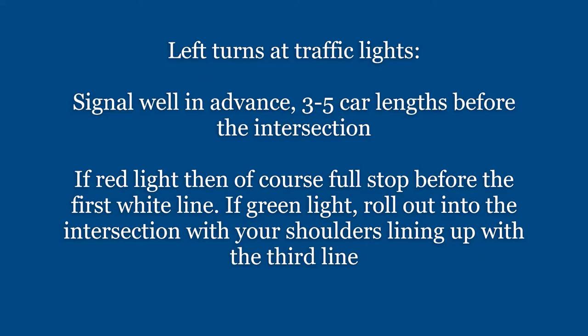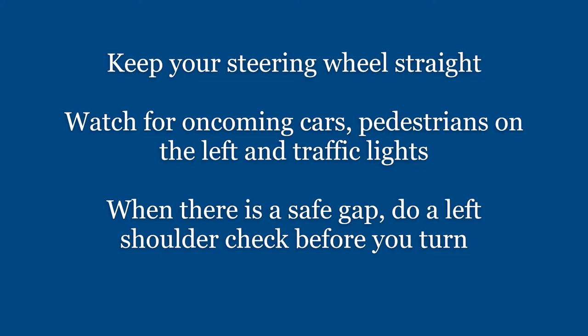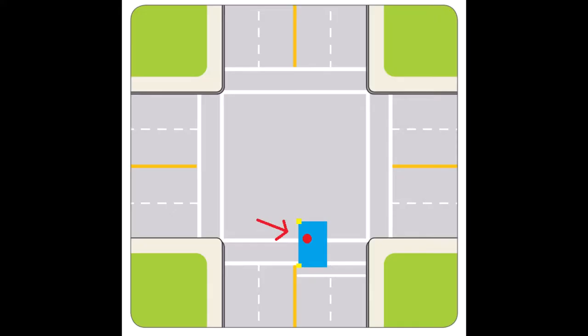Left turns at traffic lights: signal well in advance, three to five car lengths before the intersection. If red light, then of course full stop before the first white line. If green light, roll out into the intersection with your shoulders lining up with the third line. Keep your steering wheel straight. Watch for oncoming cars, pedestrians on the left, and traffic lights. When there's a safe gap, do a left shoulder check before you turn. Here's an example picture showing where you should be placing yourself on that third line.